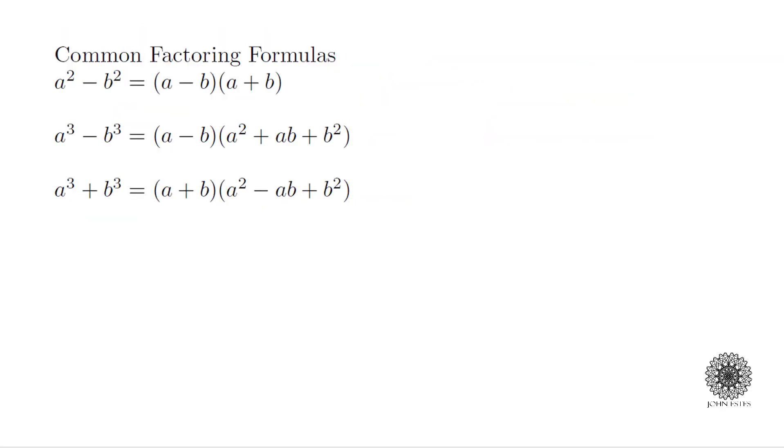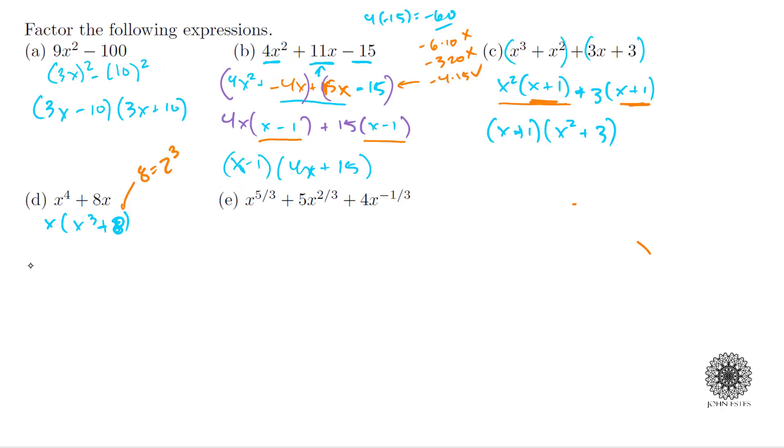So I have something cubed plus something cubed. If I look at my common factoring formulas, there is a sum of cubes formula: a³ + b³ = (a + b)(a² - ab + b²). You'll just have to kind of know that when it comes up; it's not always easy to remember. Here my a is x and my b is 2, so this becomes x times, now we'll use the sum of cubes formula, (x + 2)(x² - 2x + 2² which is 4).